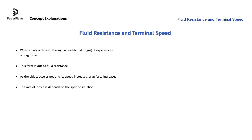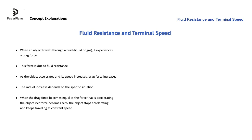At some point, the drag force becomes equal to the force that is accelerating the object. At this moment, the forces that act on the object become balanced, so the net force becomes zero. As a result, the object stops accelerating and keeps traveling at constant speed. This final constant speed is called terminal speed.